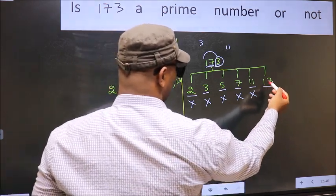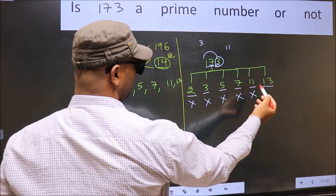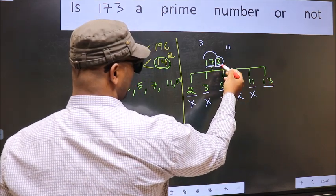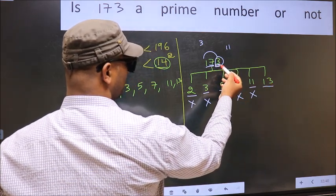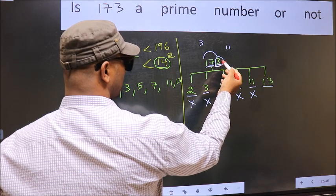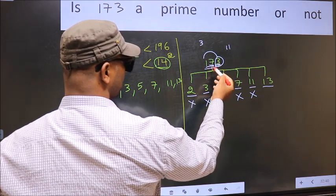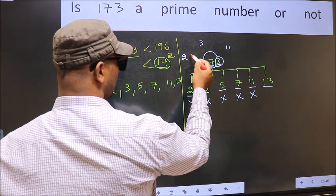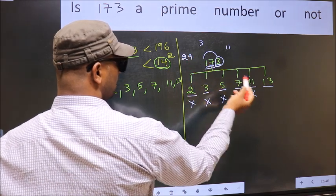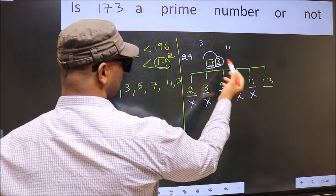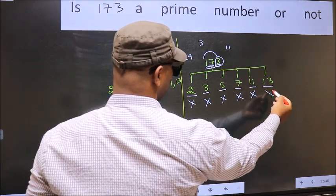Next, number 13. To check divisibility by 13, last digit you multiply by 4. 3 into 4, 12. Add to this. 17 plus 12, 29. 29 is not divisible by 13. So, this number is also not divisible by 13.